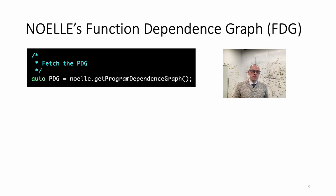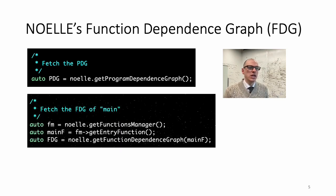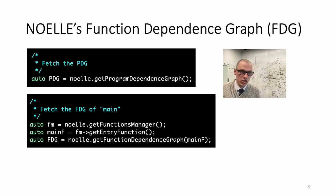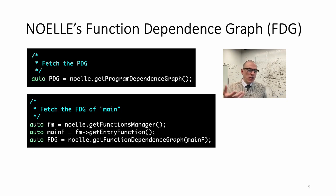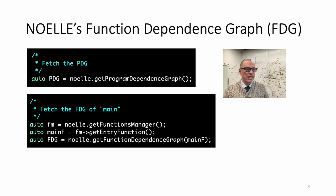In Noelle, you can also compute the function dependence graph. This is the dependence graph between instructions of a single function. In order to do that, from Noelle you have to access an abstraction called the FunctionsManager, which is the manager that knows a lot about all functions that compose the program. From the FunctionsManager, you can ask to access the entry point of execution — the main function in C and C++. Then, given a function you want to analyze, you use Noelle to compute the dependence graph only of that function, not everything else.